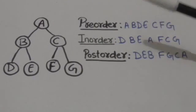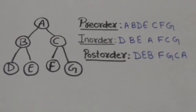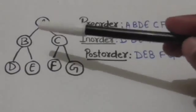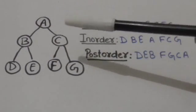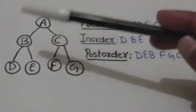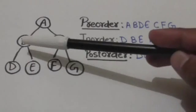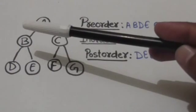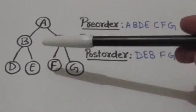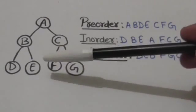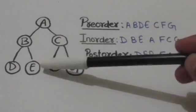Now see the post-order traversal of this binary tree T. Here A is the root of binary tree T. First, the left subtree of root A is traversed in post-order. B is the root of the left subtree of node A, so we will traverse the left subtree of node B in post-order. Left subtree of node B has only one node, that is node D, so node D will be processed. After this, the right subtree of node B will be traversed in post-order. Right subtree of node B has only one node, that is node E, so node E will be processed. After this, node B will be processed.